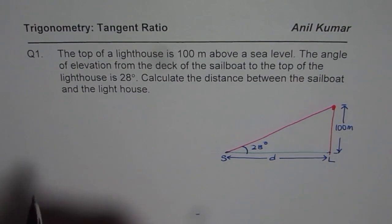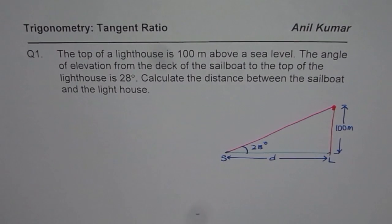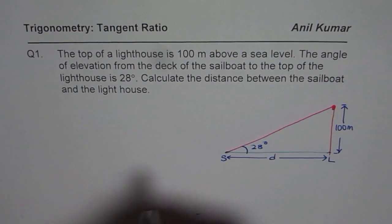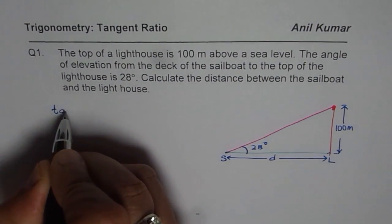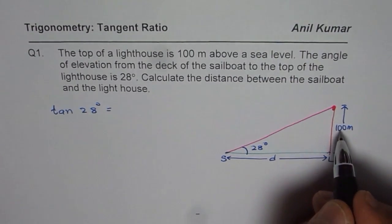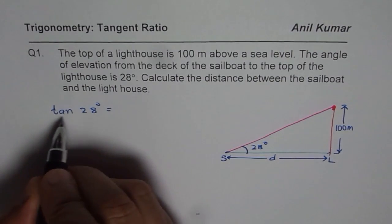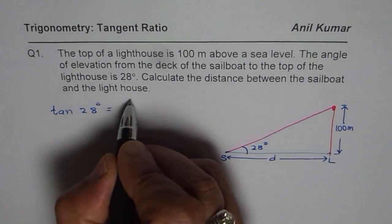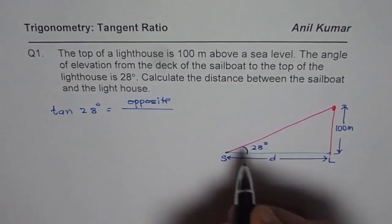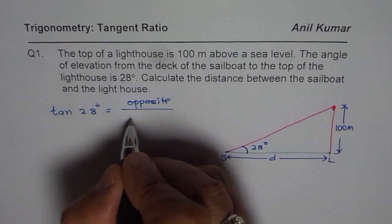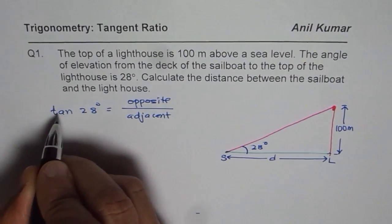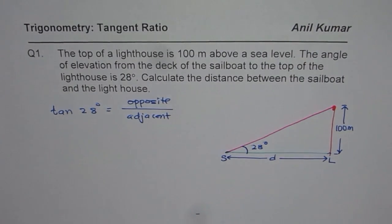Now to find this distance, we are going to use tangent ratios. So the angle given to us is 28. We say tan of 28 degrees is equal to opposite over adjacent. That is how you define tangent ratio. So in this case, what is the opposite side? It is 100. And the adjacent side, we do not know. But we can find the adjacent side using the value of tan of 28. So that is the concept.